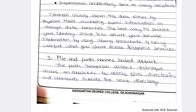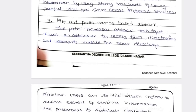The second attack is file and path name based attack, also called path traversal attack. For example, if you are hacking one system, whatever connected people are there will also get hacked through that connection. That is file and path name attack.